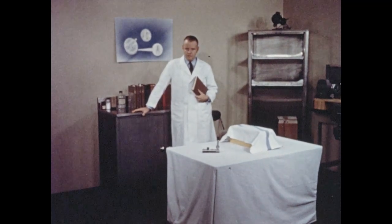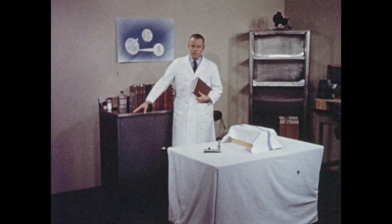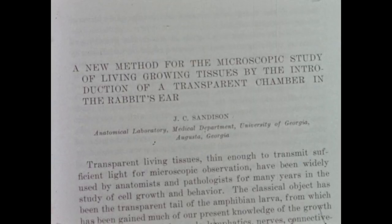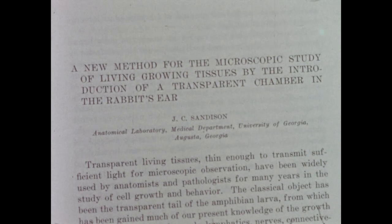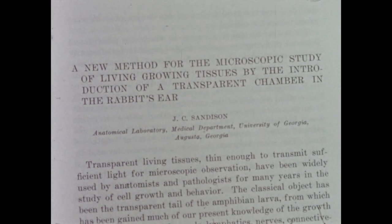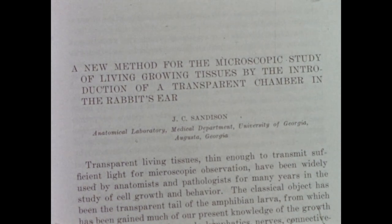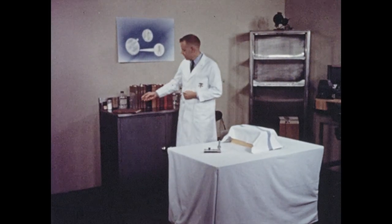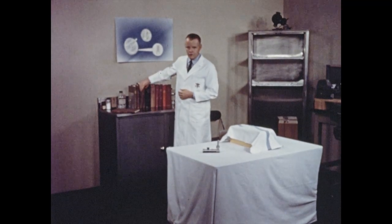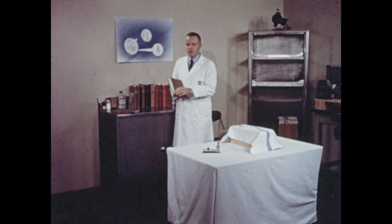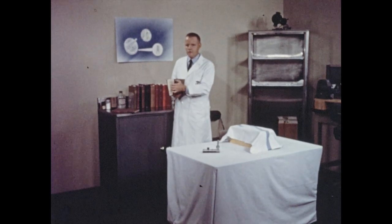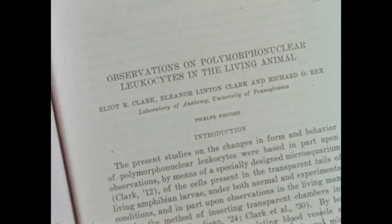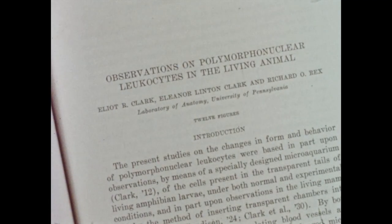The rabbit ear chamber technique was first developed by Sanderson, who in 1924 reported a new method for the microscopic study of living, growing tissues by the introduction of a transparent chamber in the rabbit's ear. The ear chamber was later modified and elaborated on by the Clarks and their associates, including their extensive report in 1936 on the observations on polymorphonuclear leukocytes in the living animal.